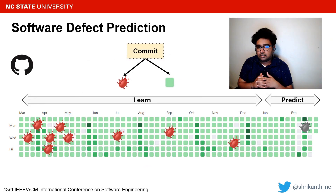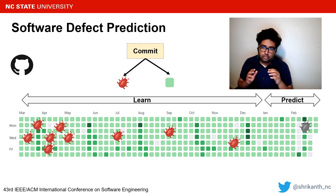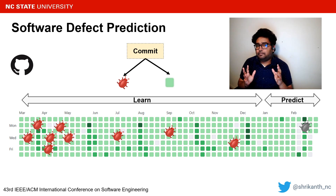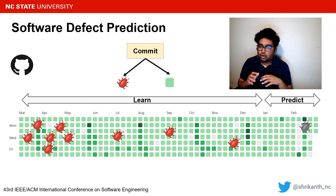For decades, software engineering researchers have been looking at ways to predict quality of software before it is used. A standard approach in this space is to build models based on large volumes of historical data. For example, in the case of a GitHub project, to classify commits in the current release, one would build machine learning models based on all past commits labeled either as defective or clean.